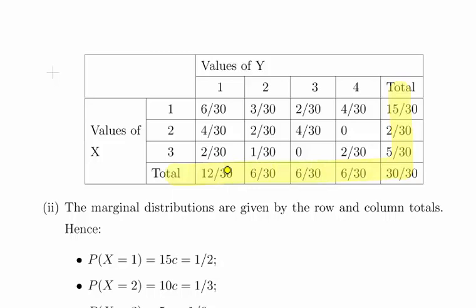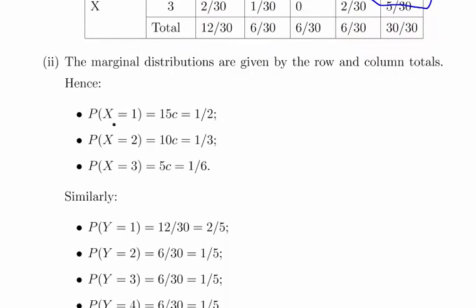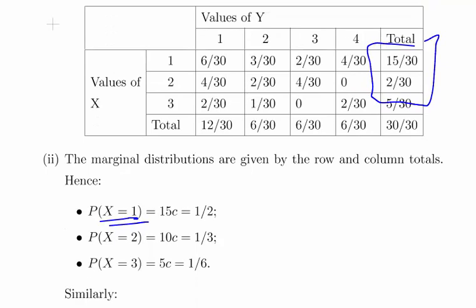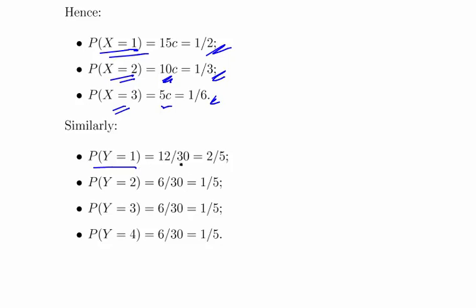That's the joint distribution with the marginal probabilities on the side. So the marginal probabilities: probability of x equal to 1 is 15c, which is 15 over 30, which is one half. 10c which is one third — that should be 10c there, sorry — and that is one third. 5c which is 5 over 30 is one sixth. And same for the other side: probability of y equal to 1 equals 12 over 30 which is 2 over 5. And all the other probabilities are 1 fifth for y equals 2, 3 and 4. So that's essentially the marginal probabilities of x and y.